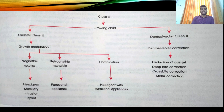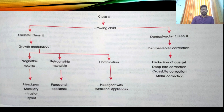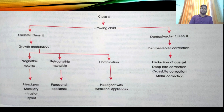For a prognathic maxilla, a headgear with an intrusion splint can be given to restrict further maxillary growth and distalize the maxilla. For a retrognathic mandible, a functional appliance is used — defined as a loose-fitting or passive appliance that harnesses forces from the orofacial musculature and transmits them to the skeletal dentoalveolar segment through muscle. Examples include the twin block, activator, bionator, and Frankel appliance. For the combination of prognathic maxilla and retrognathic mandible, a headgear combined with a functional appliance such as the twin block is used.